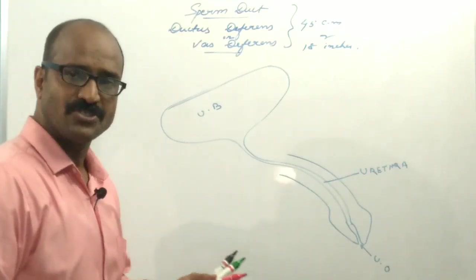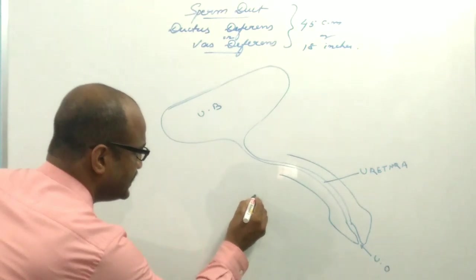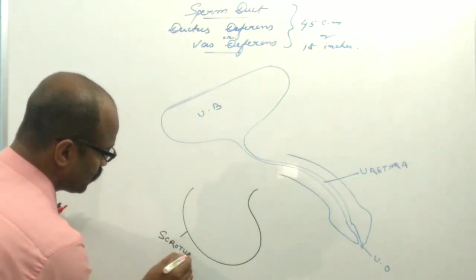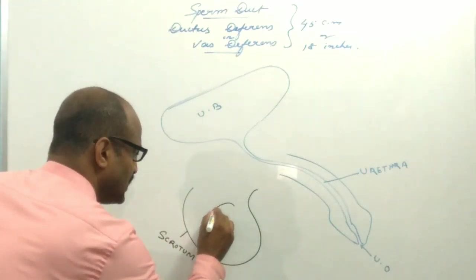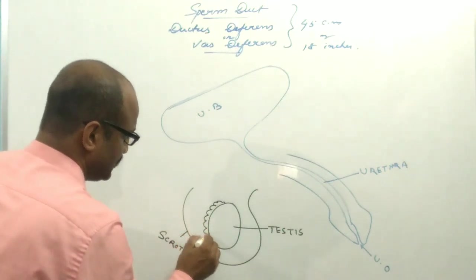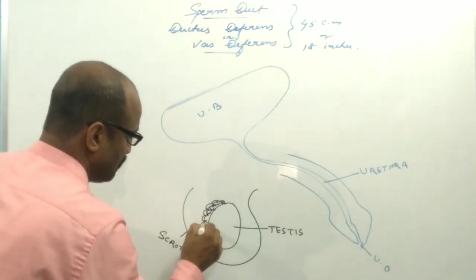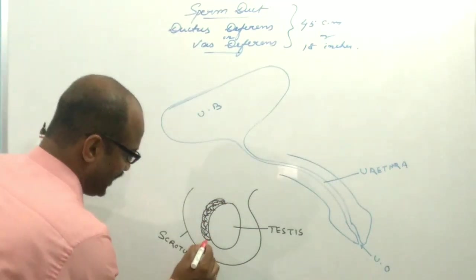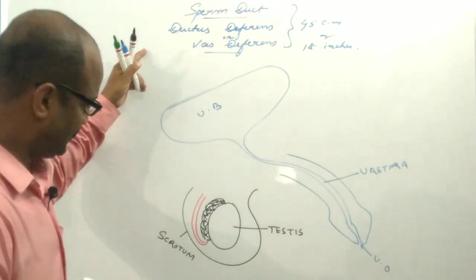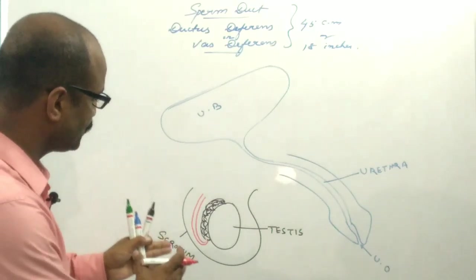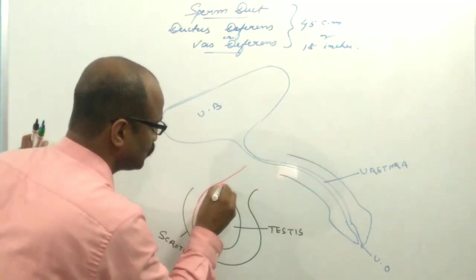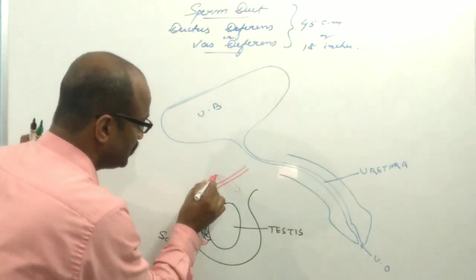The sperm duct or ductus deferens arises from the scrotal sac. Inside the scrotum there is the testes, and this portion is the epididymis. From the epididymis, a duct arises known as the sperm duct or the vas deferens. This sperm duct first runs upward along the spermatic cord and enters into the pelvic cavity through the inguinal canal.